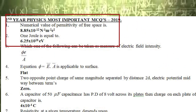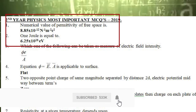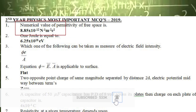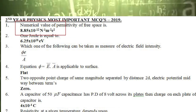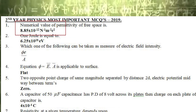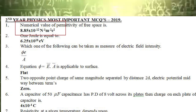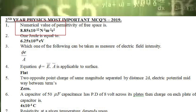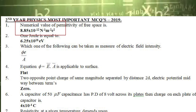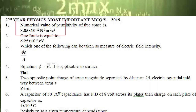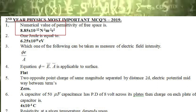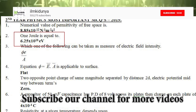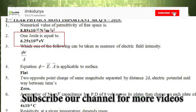The first statement is: the numerical value of permittivity of free space is. The correct answer is 8.85 multiplied by 10 raised to the power minus 12, farad per meter, or newton farad meter squared per coulomb squared. The second statement is: 1 joule is equal to. The correct answer is 6.25 multiplied by 10 raised to the power 18 eV.